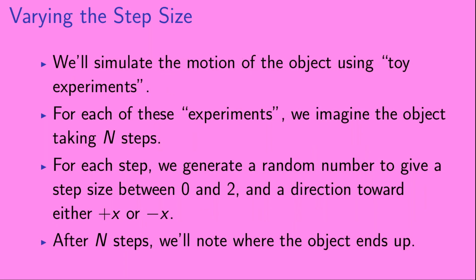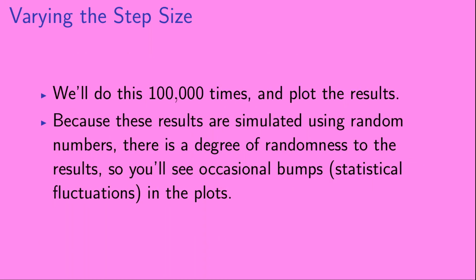We'll simulate the motion of the object using toy experiments. For each experiment, we imagine the object taking n steps. For each step, we generate a random number to give a step size between 0 and 2, and a direction toward either plus x or minus x. After n steps, we'll note where the object ends up. We'll do this 100,000 times and plot the results. Because these results are simulated using random numbers, there is a degree of randomness to the results, so you'll see occasional bumps — in other words, statistical fluctuations — in the plots.